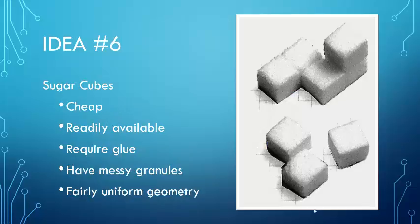And then finally, design idea number six is for those puzzle pieces we want to make using sugar cubes. They're really cheap. They're easy to get a hold of. They would require glue or something like that, because the tape doesn't seem to work very well. They are kind of messy, because they start falling apart, with little bits of sugar falling everywhere. And they're fairly uniform in their geometry, but they get chipped and start breaking apart.